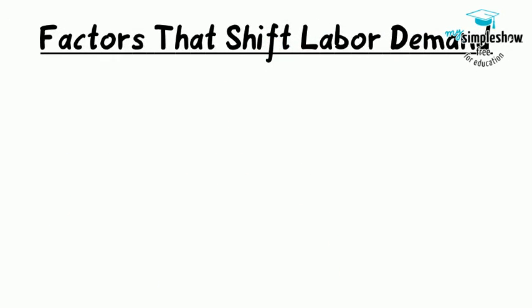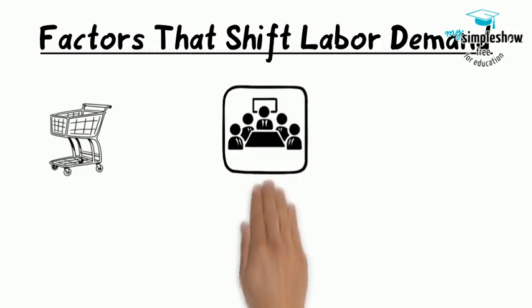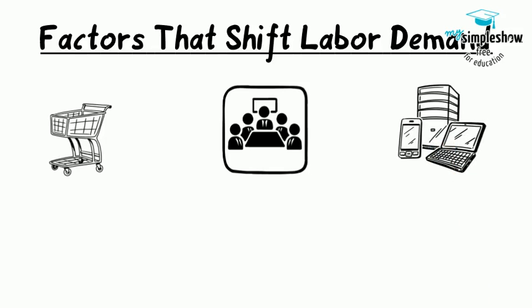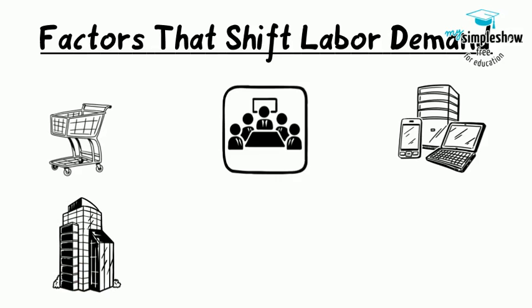Factors that can shift demand. 1. Demand for output: when the demand for the good produced increases, both the output price and profitability increase. 2. Education and training: a well-trained and educated workforce causes an increase in the demand for that labor by employers. 3. Technology changes can act as either substitutes for or complements to labor. 4. Number of companies: an increase in the number of companies producing a given product will increase the demand for labor, resulting in a shift to the right.